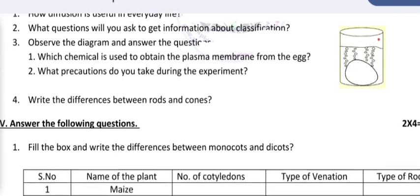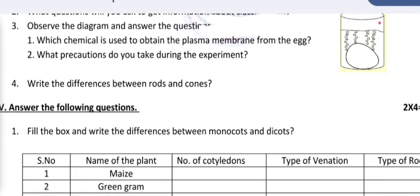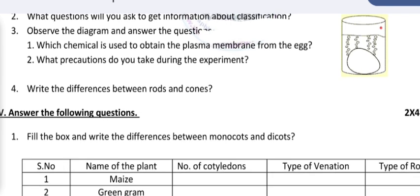Observe the diagram and answer the questions. Number one: this diagram you have to see. Which chemical is used to obtain the plasma membrane from the egg? Number two: what precautions do you take during the experiment? Next, fourth one: write the differences between rods and cones.